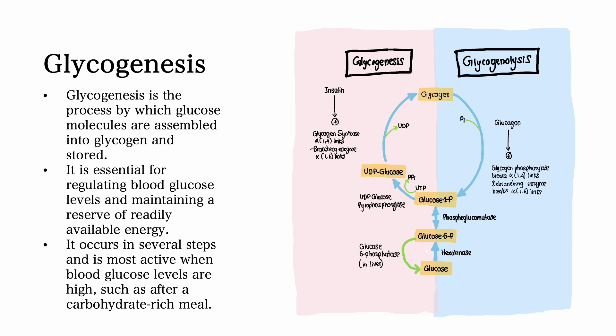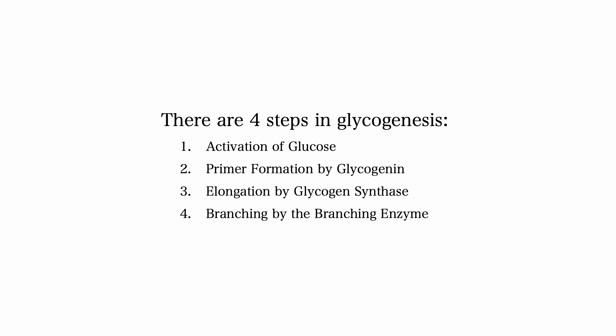Now that we know what glycogen is, let's talk about how it's made. Glycogenesis is the process by which glucose molecules are assembled into glycogen and stored. It's essential for regulating blood glucose levels and maintaining a reserve of readily available energy. It occurs in several steps and is most active when blood glucose levels are high — for example, after a high carbohydrate-rich meal. There are four steps in glycogenesis: activation of glucose, primer formation by glycogenin, elongation by glycogen synthase, and branching by the branching enzyme.